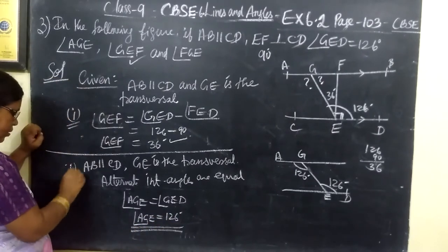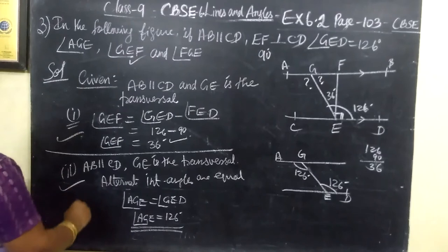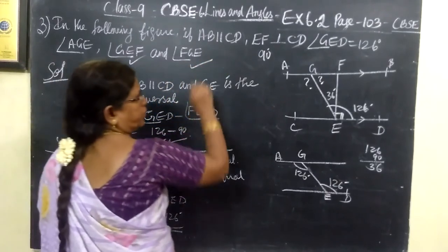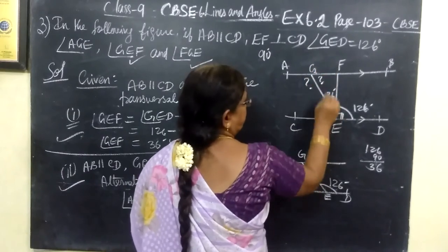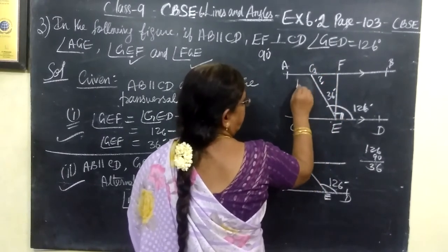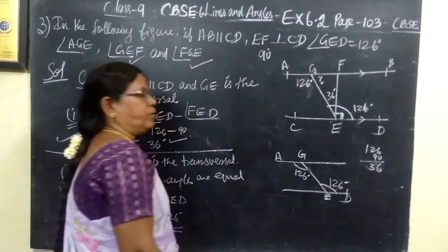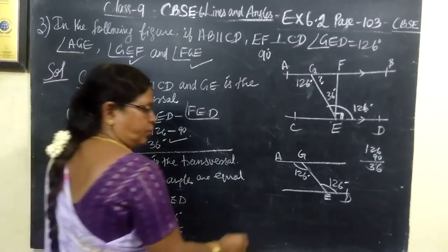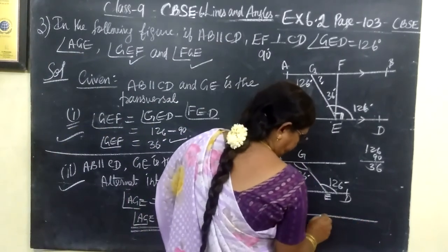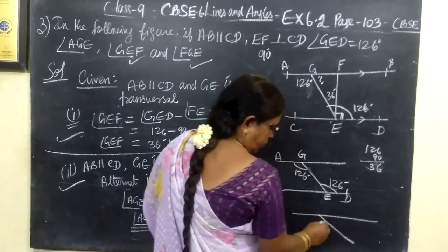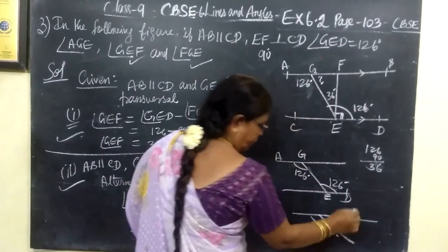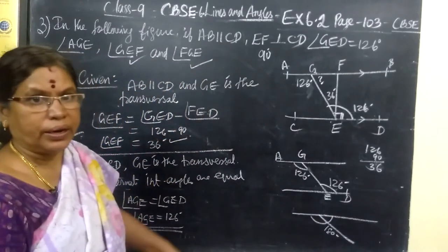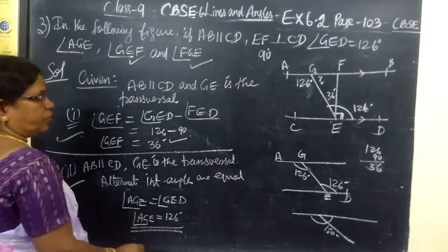Then next one, FGE. Where is FGE? This is question mark. Already we know this is 126 degrees. And you know, if it is a straight line and a ray stands on it, then the sum of the angles is equal to 180 degrees. Linear pair. So third one.